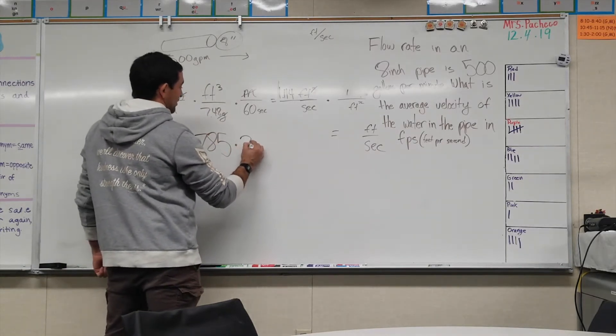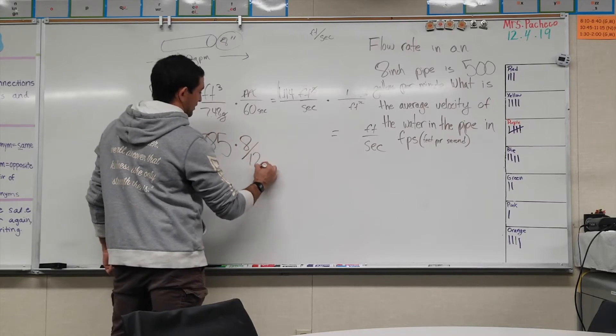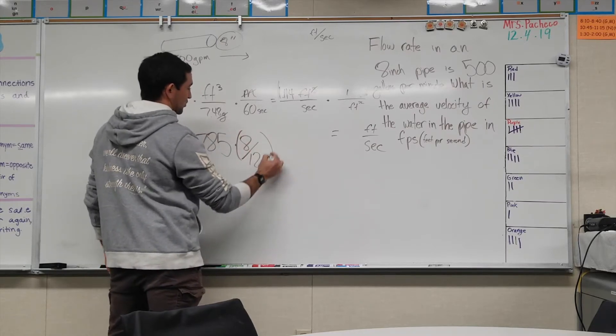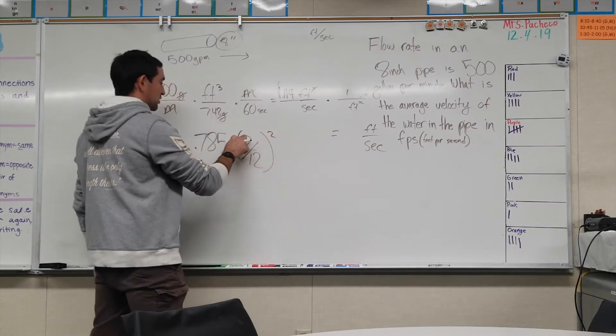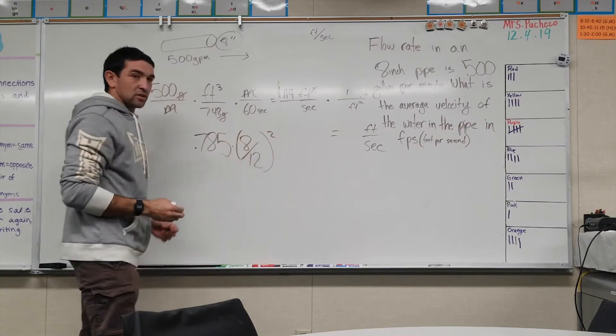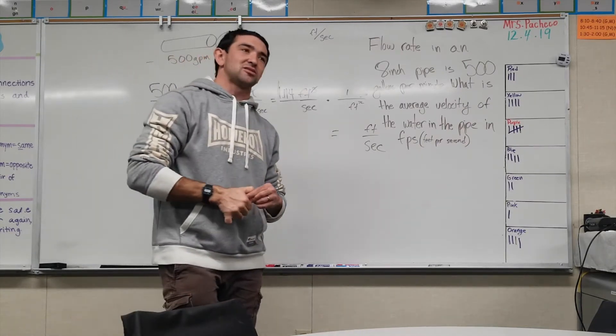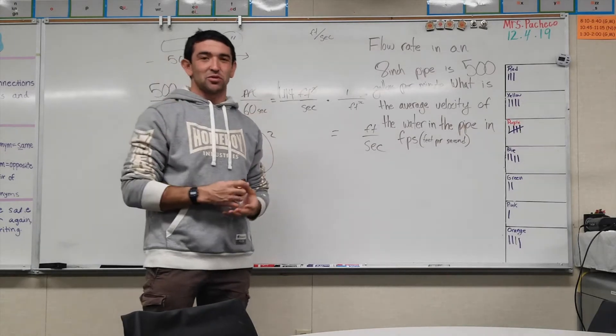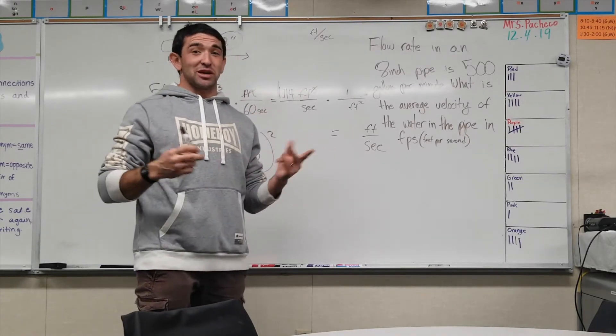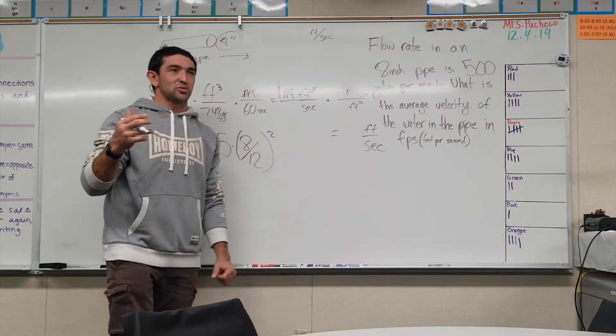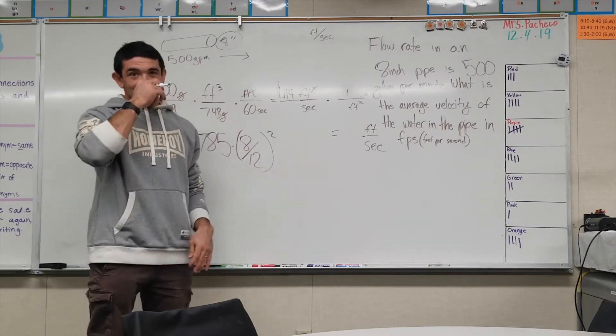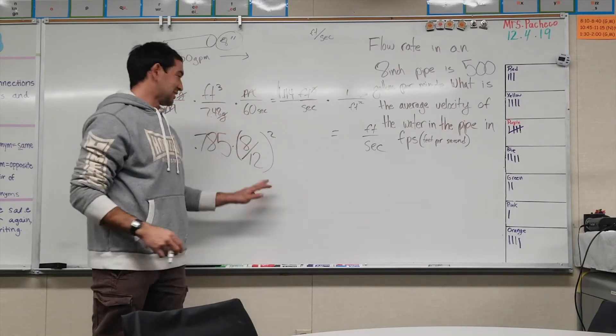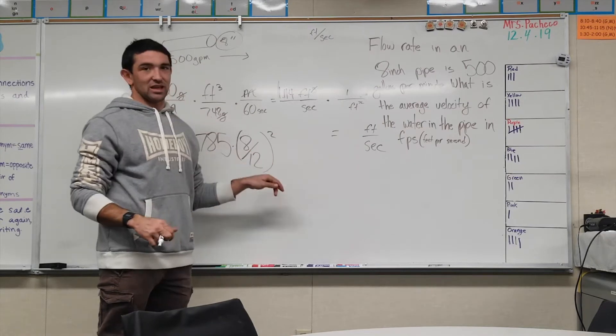You do the diameter times the diameter, so 8 inches squared. You can do that on one of those Texas Instruments calculators that have more buttons, but if you're just using the cheap calculator on the test you can just do 8 divided by 12.